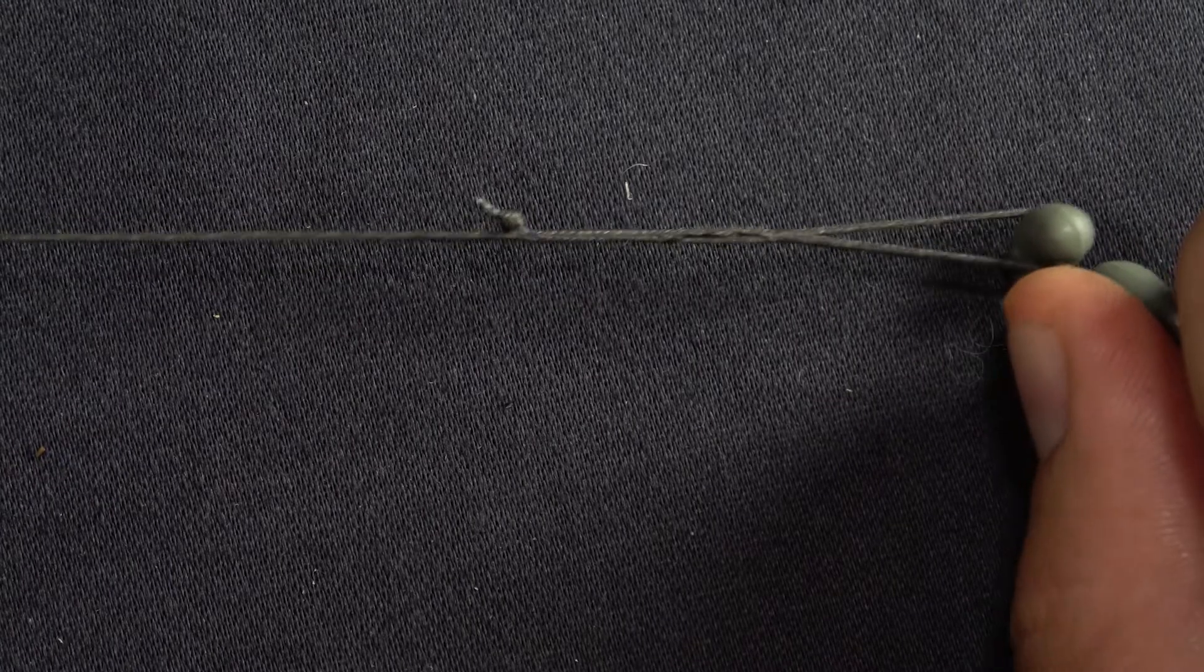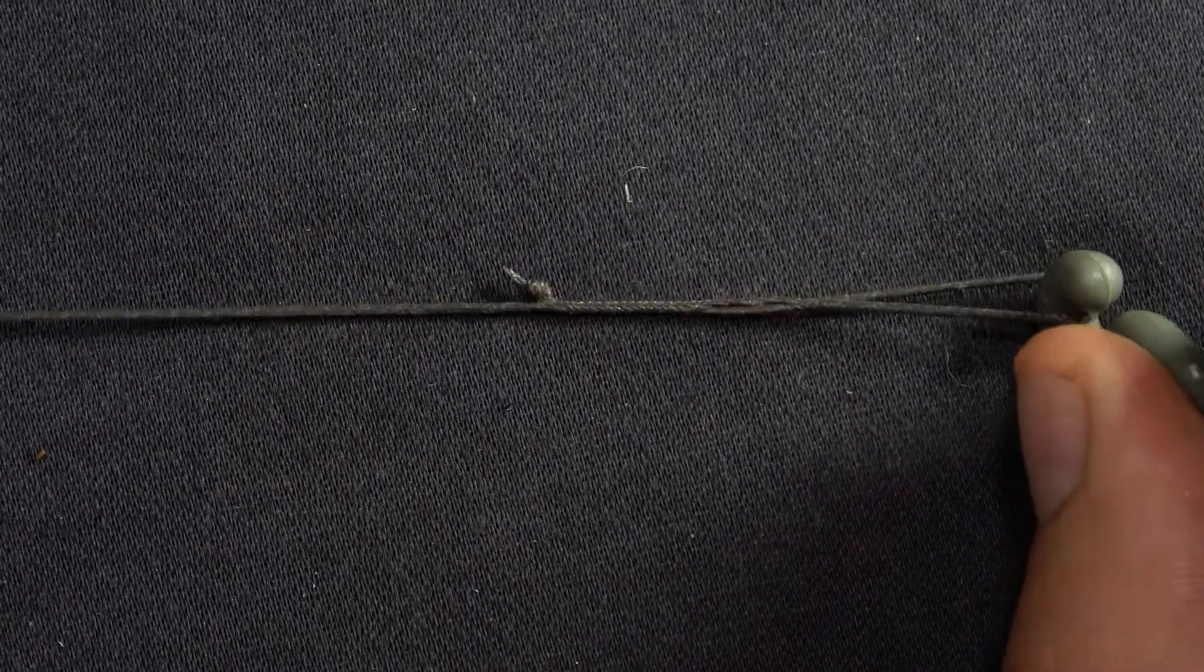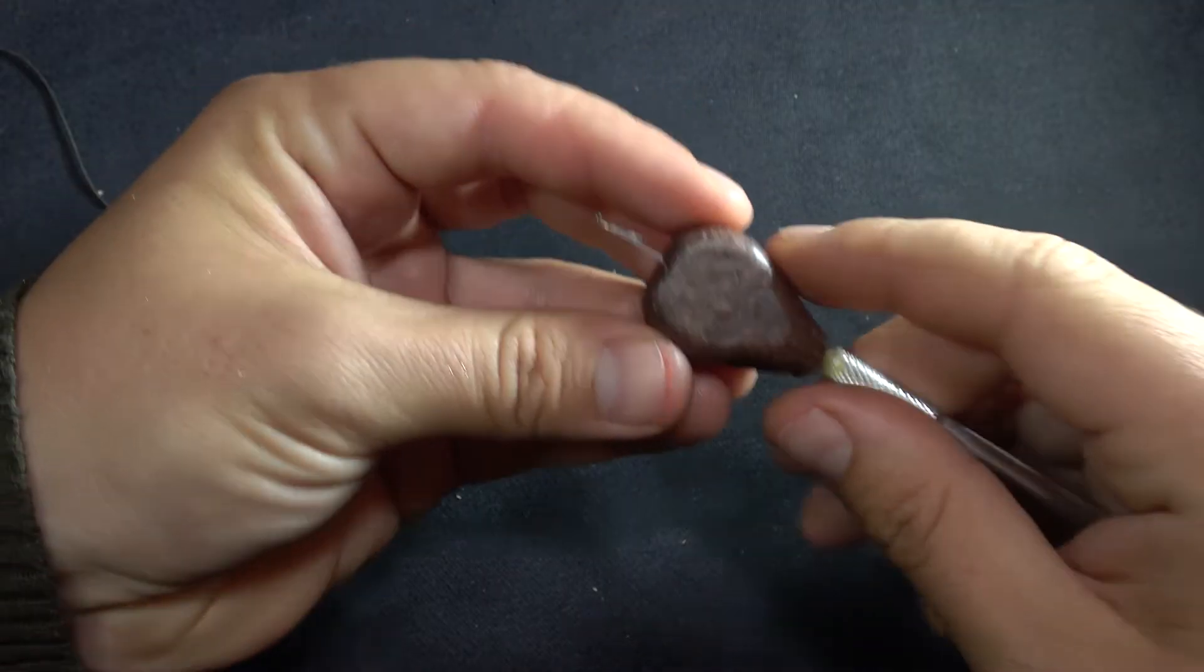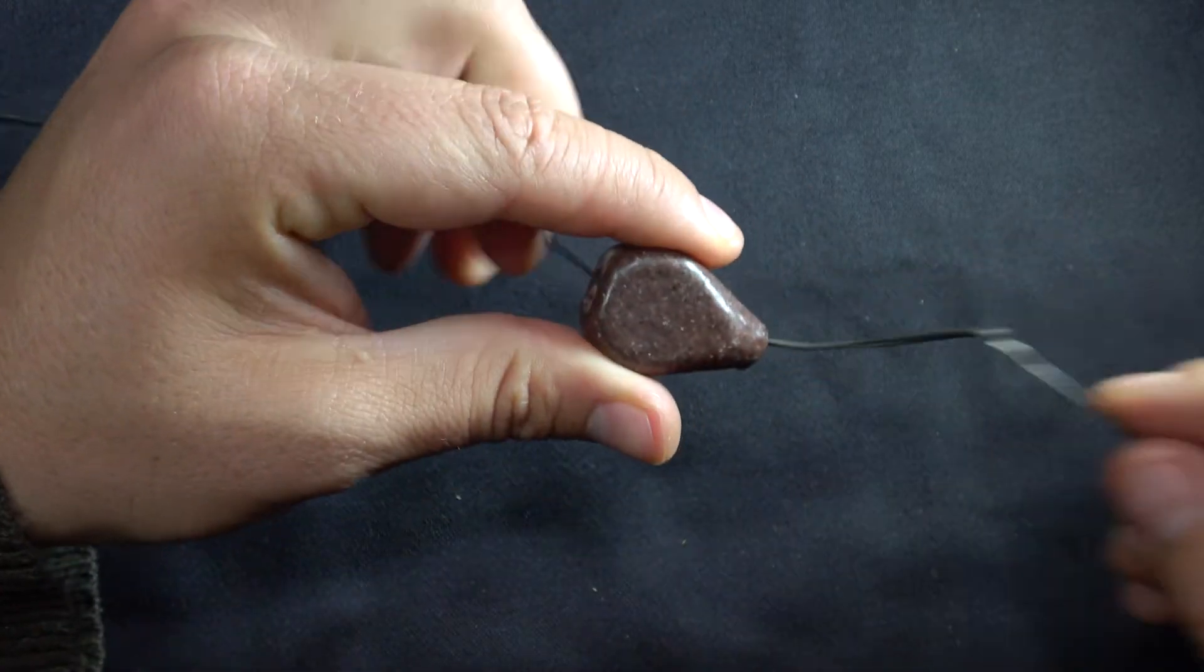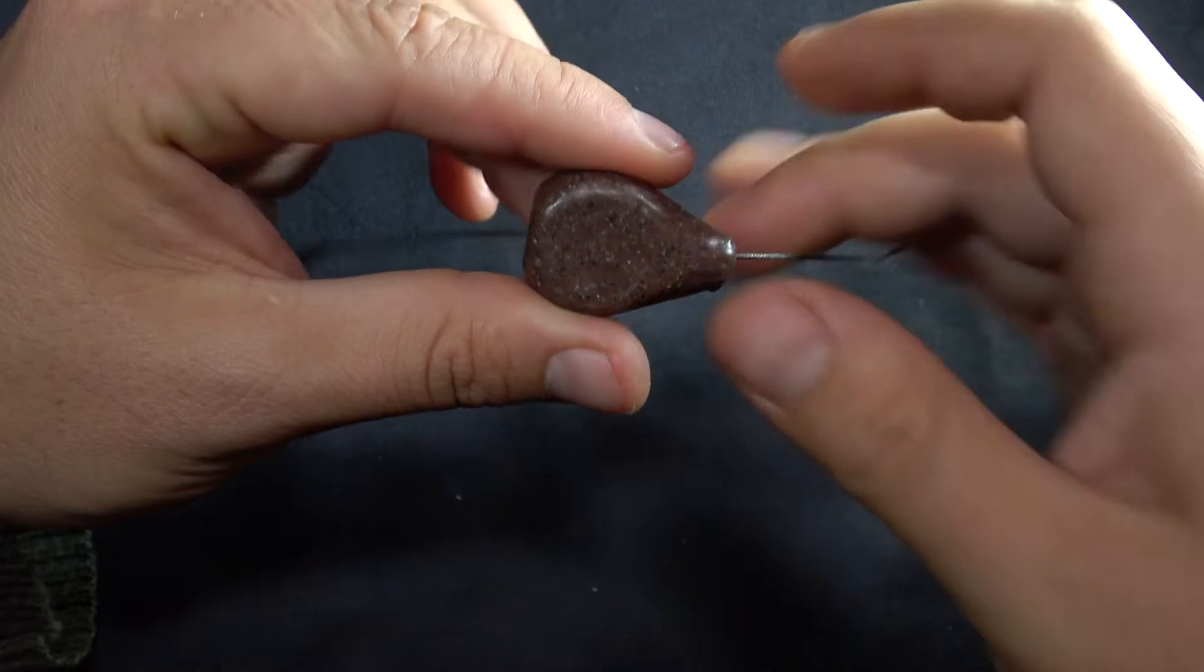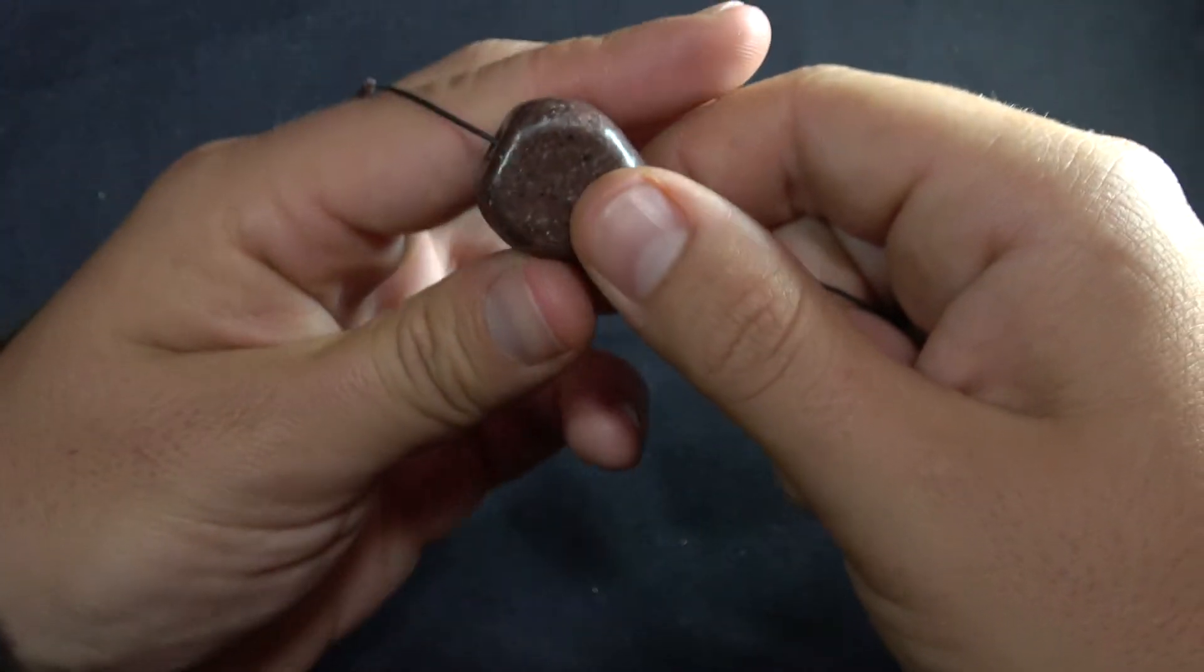The next step, get your inline lead and slide it onto your lead free. Slide it all the way down and push it tight onto your knot.